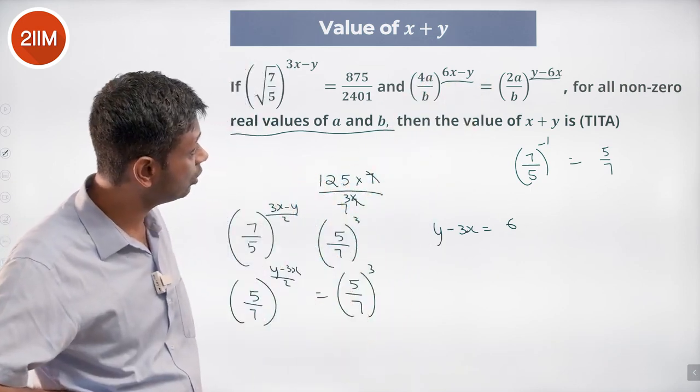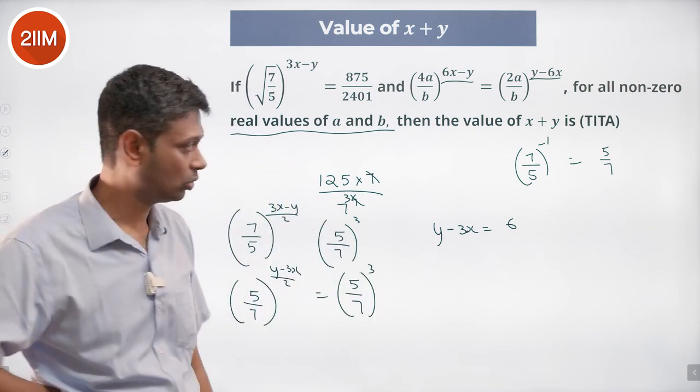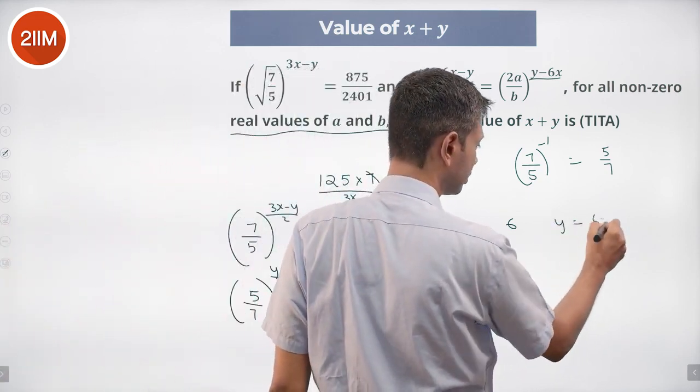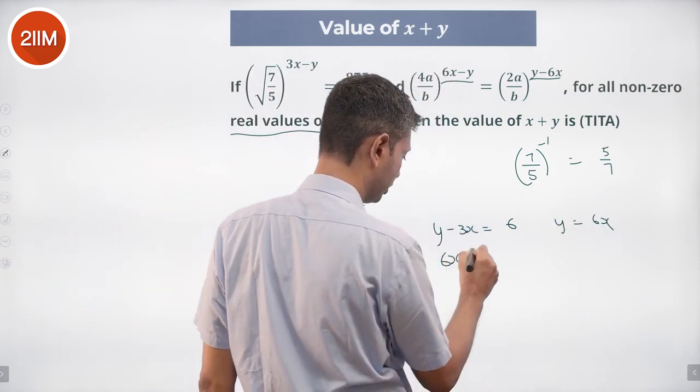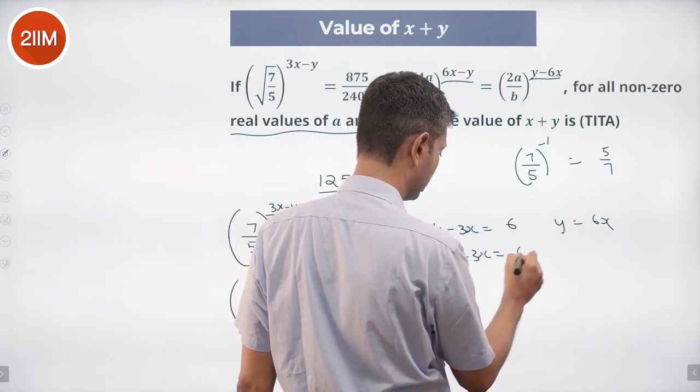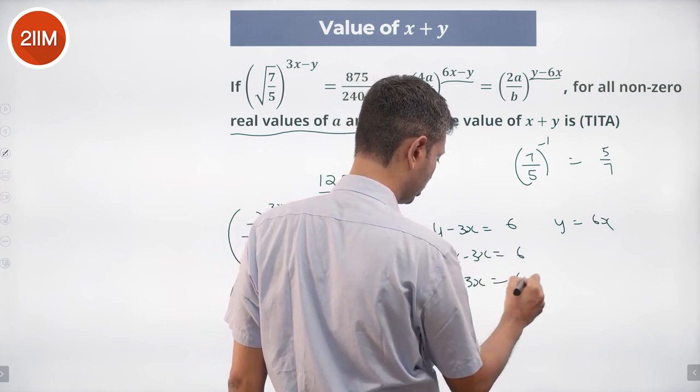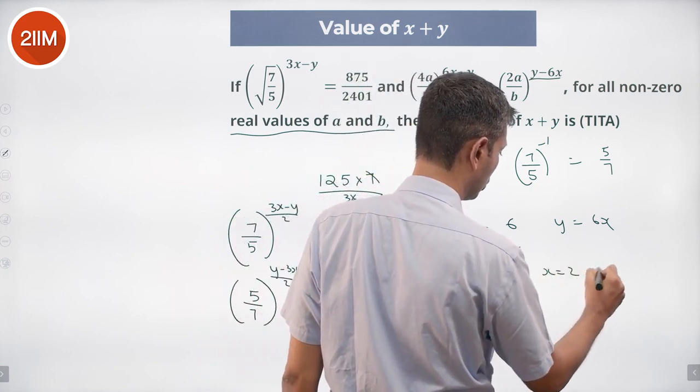6x minus y should be equal to y minus 6x equal to 0, or y is equal to 6x. 6x minus 3x is equal to 6. 3x is 6, x is 2, y is 12.